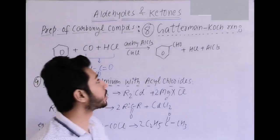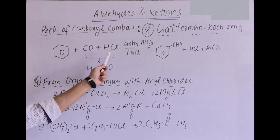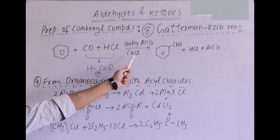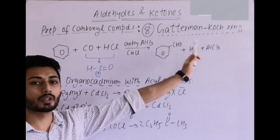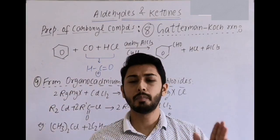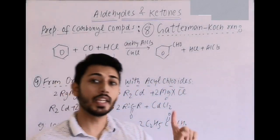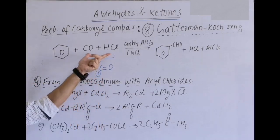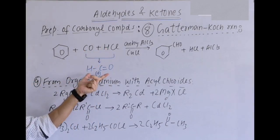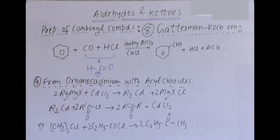Next: Gattermann-Koch synthesis — also an NCERT reaction. Benzene with CO and HCl in presence of anhydrous AlCl3 and CuCl gives benzaldehyde. CO with HCl generates the electrophile, which is the acylium ion, and it undergoes electrophilic aromatic substitution on the benzene ring.